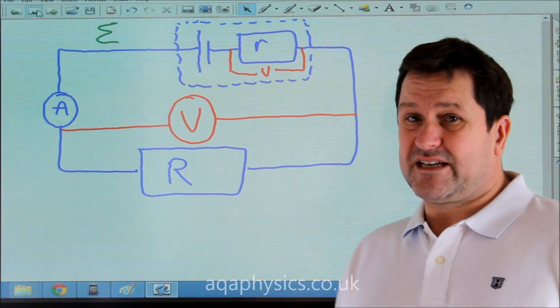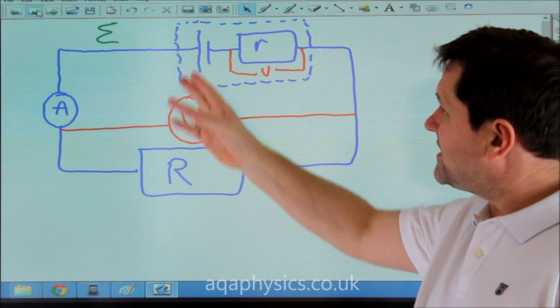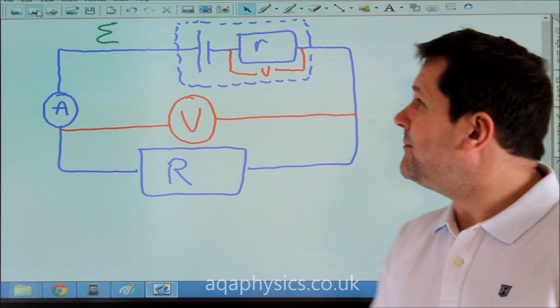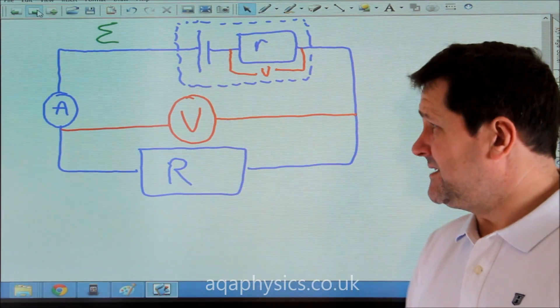This is the basic circuit. This here is the EMF of the battery, the electromotive force. This is the energy supplied per coulomb of charge passing through the battery, transferred to electrical energy.